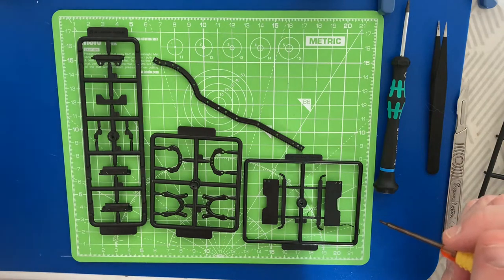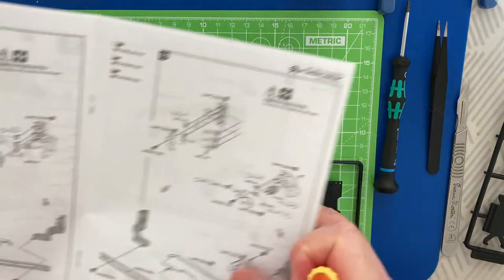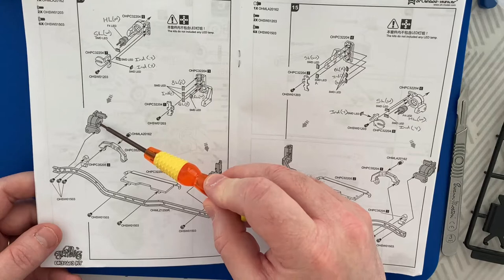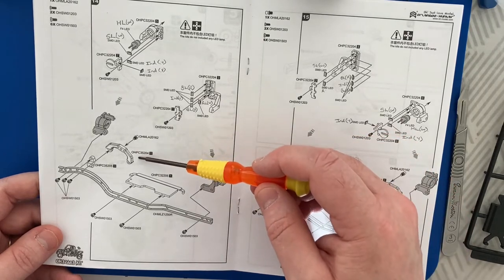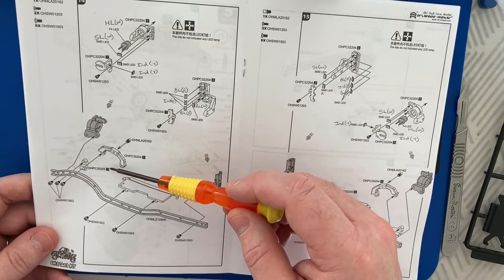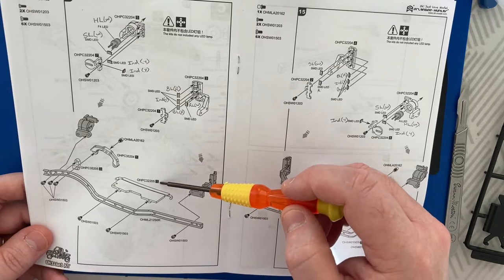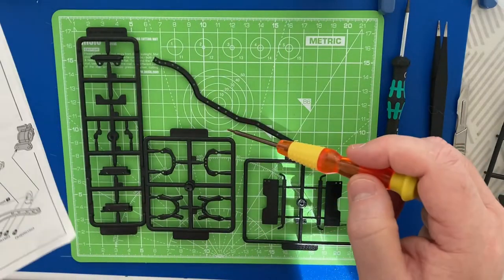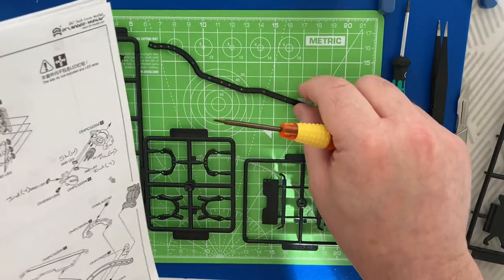So we need a few parts off of the part tree now. Not just the two light systems that we just built and wired, the front and the rear ones. We also need part number one off of parts tree OHPC 35204, part number three off of parts tree OHPC 35205, and part number one off of OHPC 32205. And we also need one of the chassis members, chassis rails.